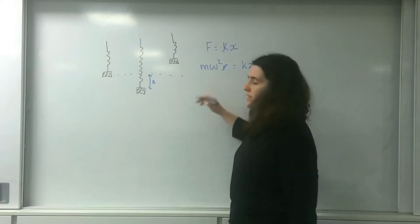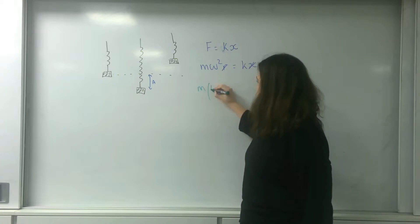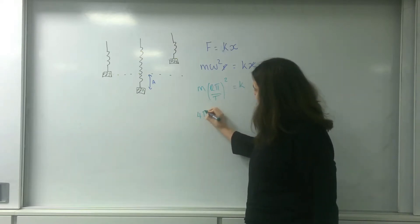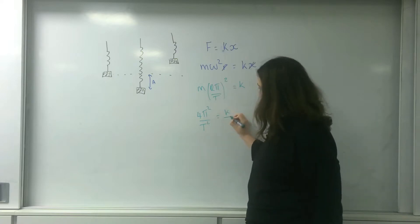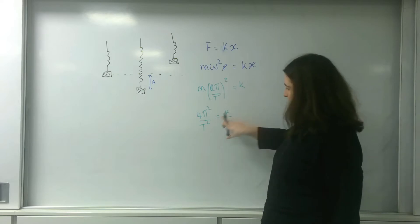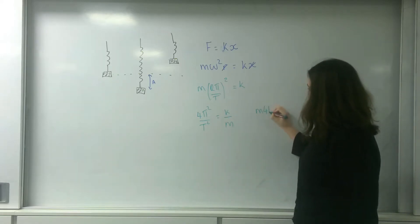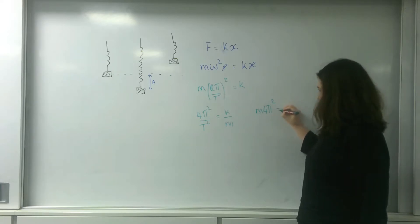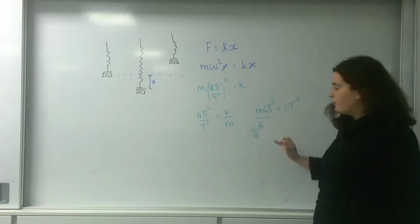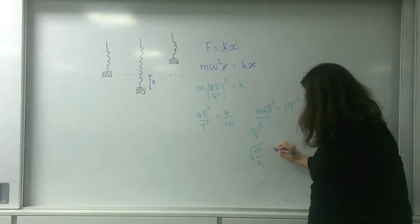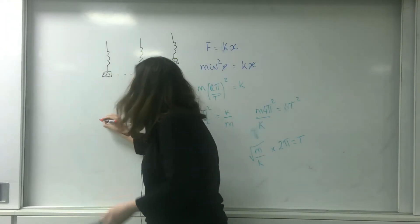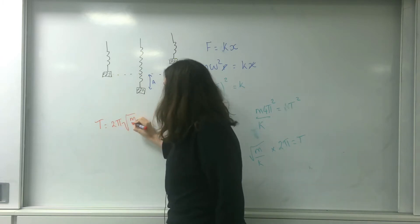Cancelling those terms leaves the formula, and I'm going to extend the algebra to get the time period. So: m times (2π/T)² equals k, giving 4π²/T² = k/m. Rearranging, m times 4π² equals k times T², then moving k down and square-rooting the lot, I end up with T equals 2π times the square root of m over k.